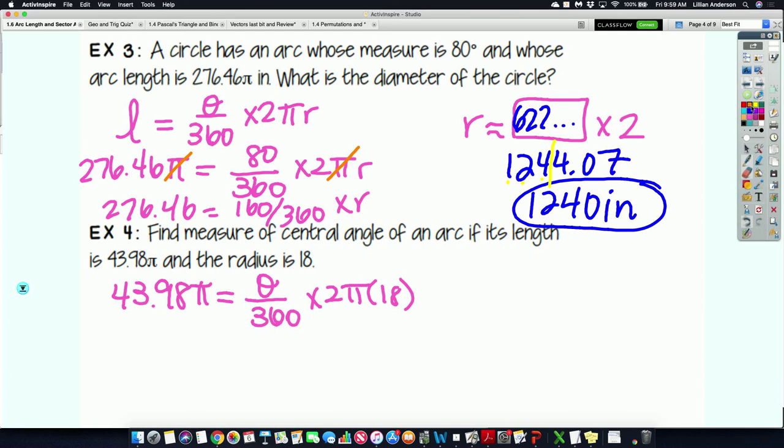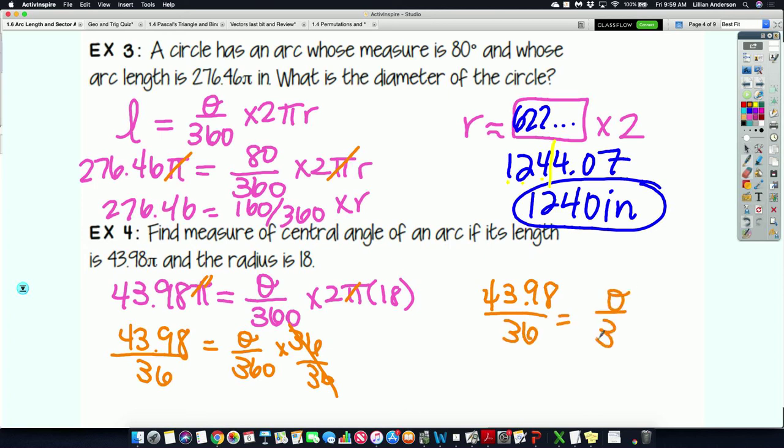So, go ahead and find theta rounded to three significant figures. So, we're going to cancel the pi. And then, okay, so we have theta over 360 times 36. Divide by 36 on both sides. So, then I get this. So, now I have whatever that number is divided by 36 equals theta over 360. So, then I just need to multiply by 360. And your answer should have been 400. And technically it's 439.8. But when you round to three significant figures, you get 440.